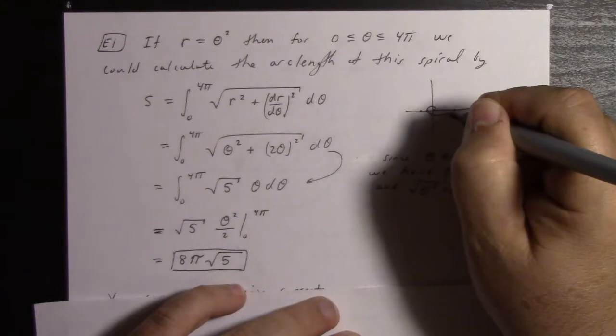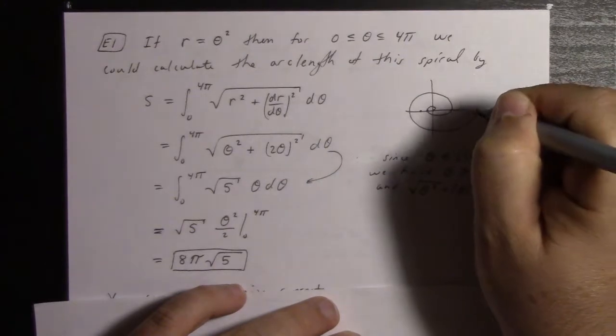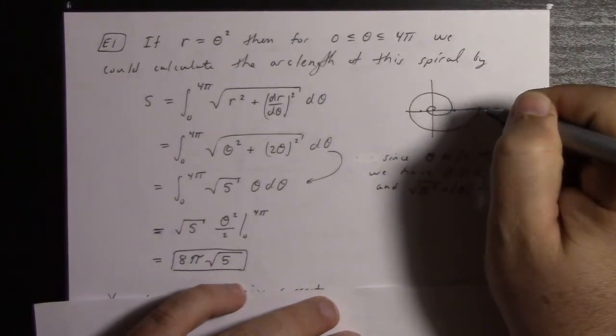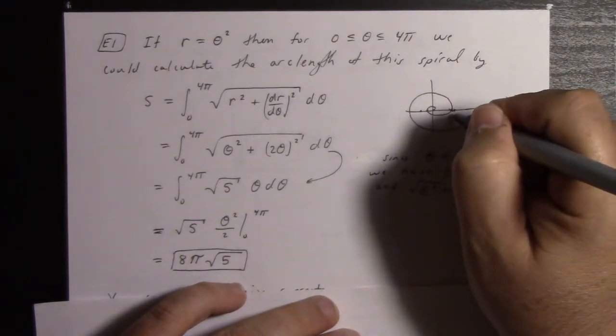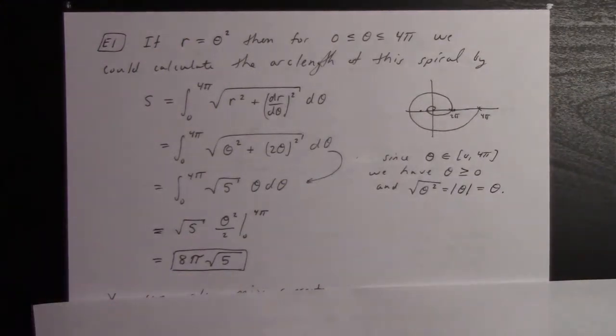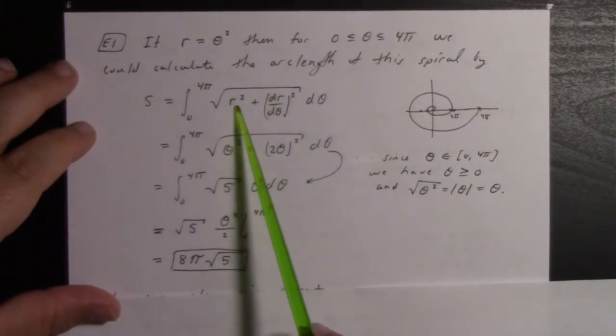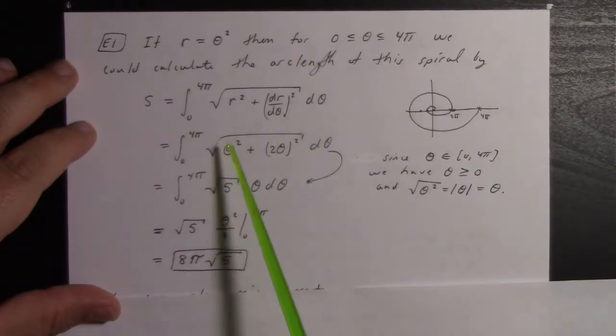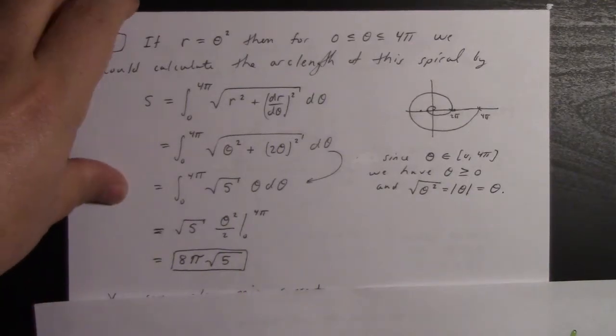That's probably still not quite right, but it's something like that. This would be the 2π mark, and that would be the 4π mark. The arc length of that thing we can calculate with the polar coordinate arc length formula, which is √(r² + (dr/dθ)²) dθ. I do the math, and lo and behold, 8π√5. Not too bad.